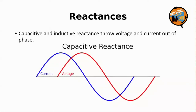Through a capacitor, things are just the opposite. As the cycle begins, current flows easily through the capacitor, so there's virtually zero voltage across it — it's acting almost like a straight wire. As the capacitor fills up with charge, the current decreases and the voltage increases. So in this case, current is leading voltage.